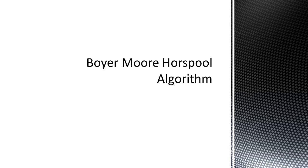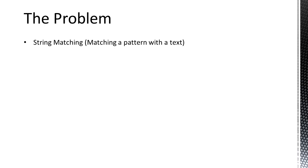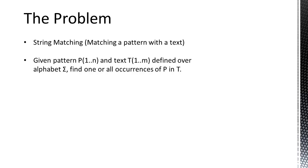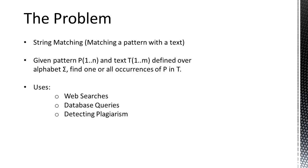This video is going to explain the Boyer-Moore-Horspool algorithm and define the problem it attempts to solve. The problem is string matching, which is essentially matching a pattern with a text. Given a pattern P of length N and a text T of length M, defined over an alphabet sigma, find one or all occurrences of P in T. This problem is extremely useful for applications such as web searches, database queries, and detecting plagiarism.